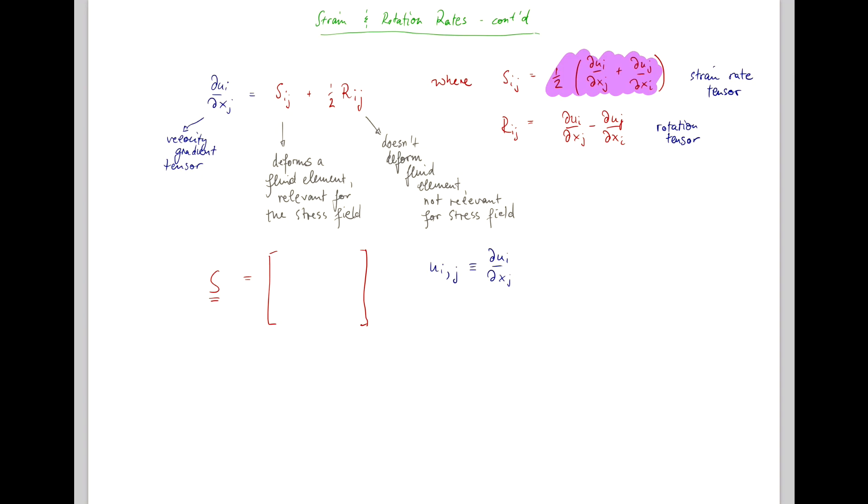for example, S11, in this case you would have a half du1/dx1 plus a half du1/dx1, so it would just be du1/dx1.